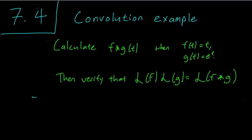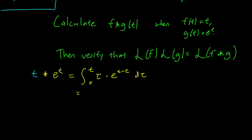Let's get to it. So t convolved with e^t is equal to the integral from 0 to t. Remember for the convolution, we put the first function with tau and the second function with t minus tau, d tau. Let's just expand that out: we have e^(t minus tau), d tau.